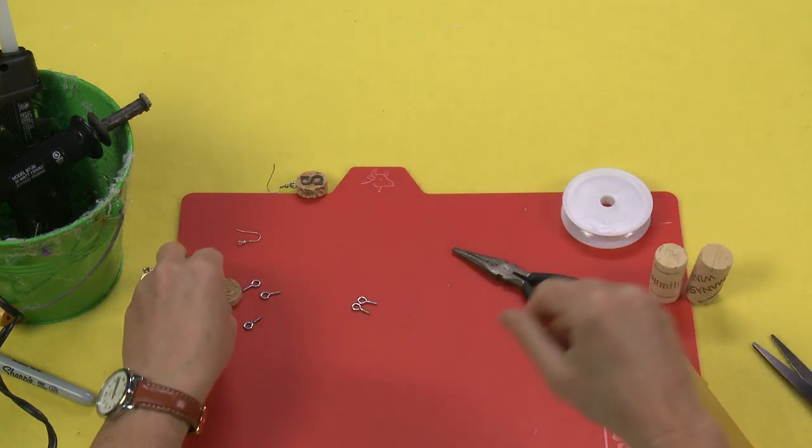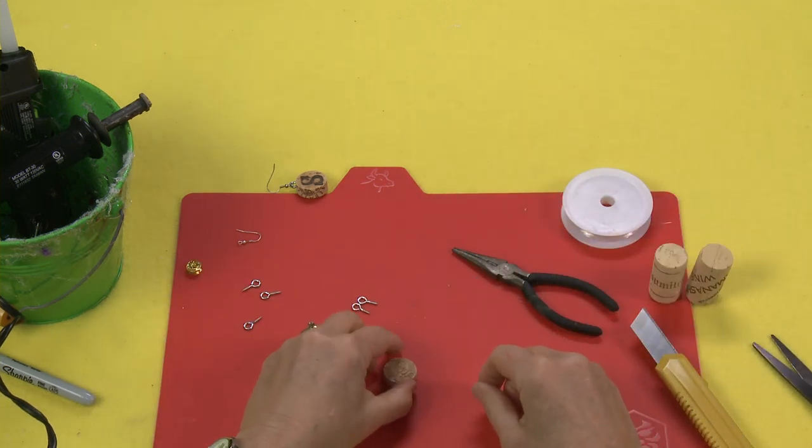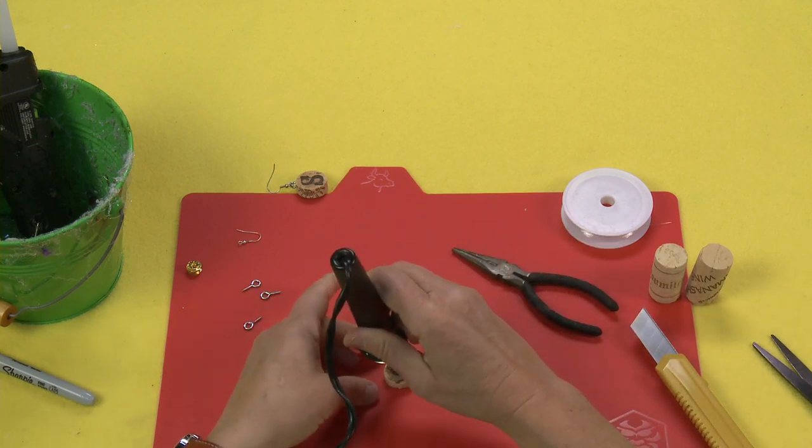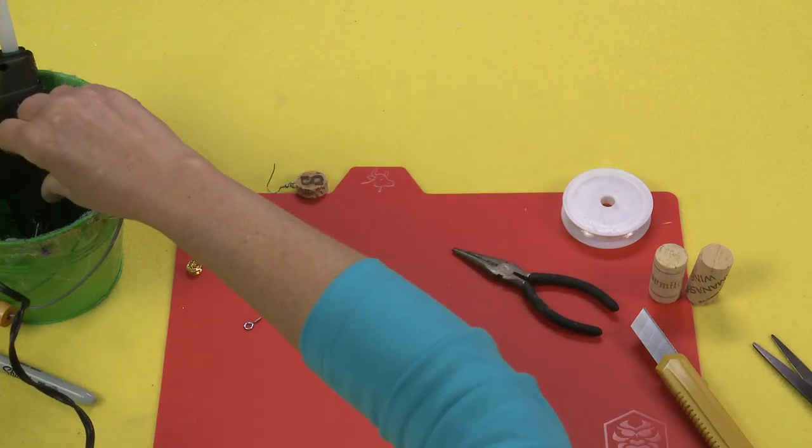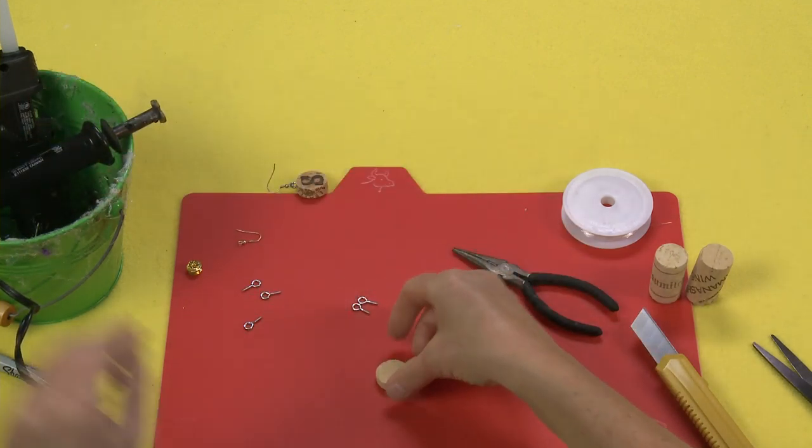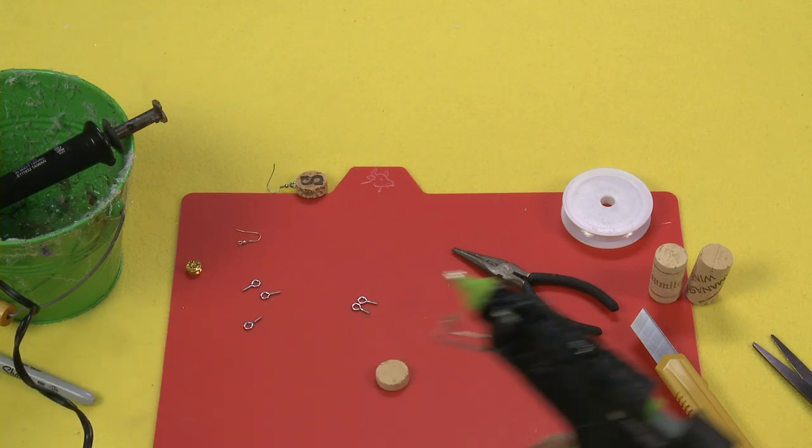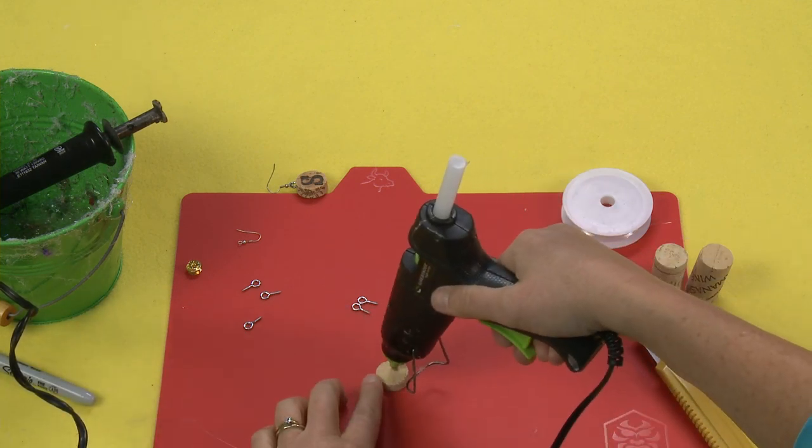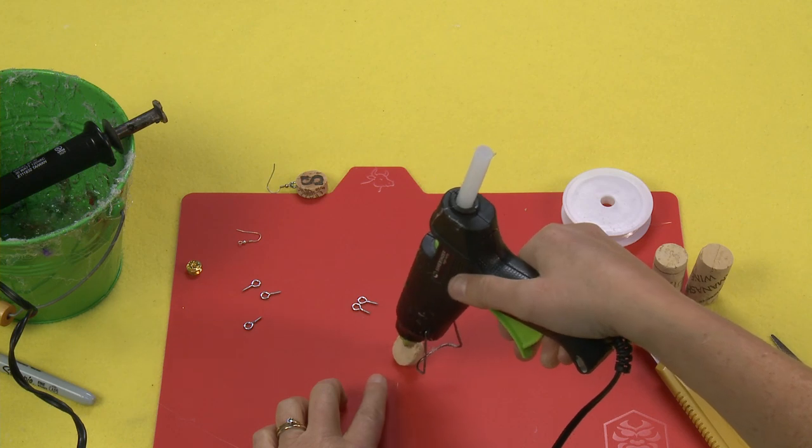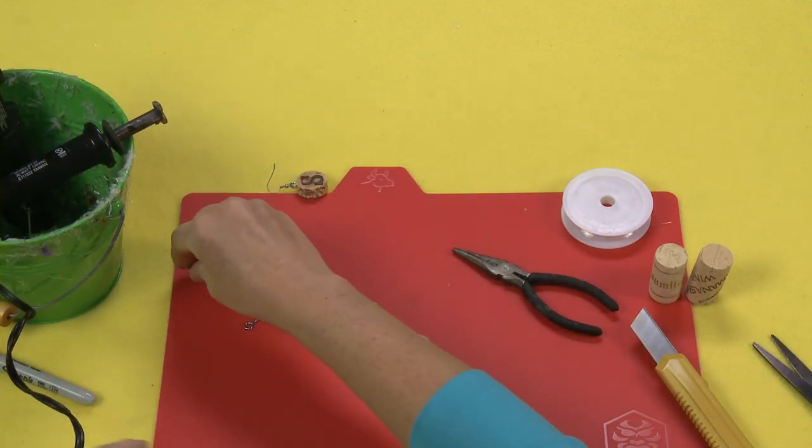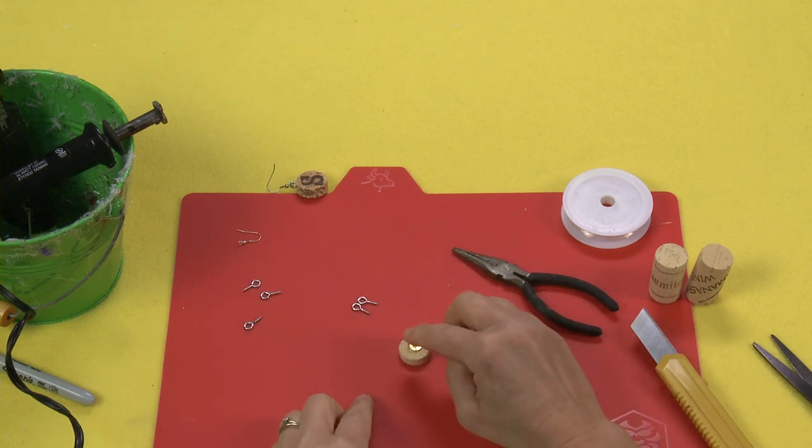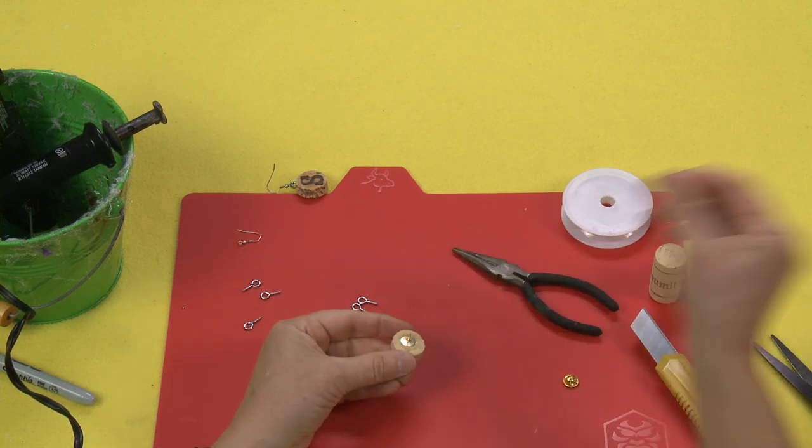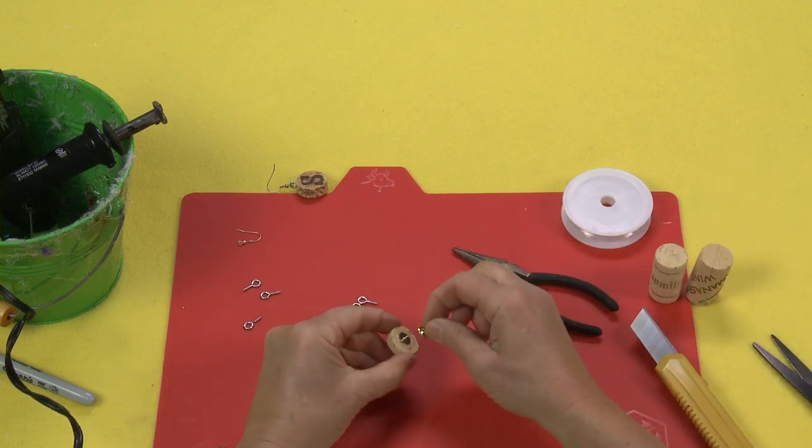And then the last one I want to show you is a tie tack, and that's super easy. All you do is burn your letter, flip it over, take a little hot glue, put a little hot glue on the back of your cork and put your tie tack right on the back. Let it set up really nice and good, and as soon as it's dry.